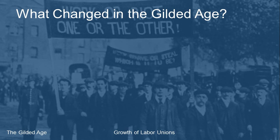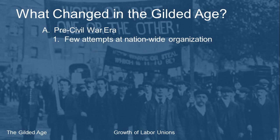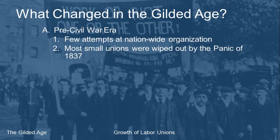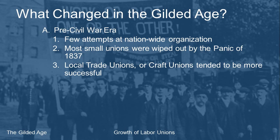What changed in the Gilded Age that caused this growth of the labor union movement? We have to look at what was going on before. In the pre-Civil War era, there were no real nationwide unions — there were some attempts but they weren't very successful. There were small, localized or regional unions, and most of those were wiped out due to the economic problems of the Panic of 1837.